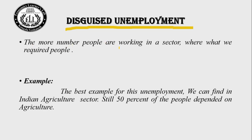Disguised unemployment: more people are working in a sector than what is required. The current working population exceeds the sector's requirement capacity, causing labor productivity to decline. The best example is India's agriculture sector, where still 50% of people depend on it but productivity is very low compared to the industry and service sectors.